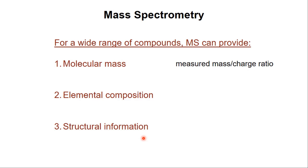Molecular weight is a weighted average of sorts that considers all the isotopes and their different masses in a molecule. Because mass spectrometers measure mass, which is a universal property of matter, this makes mass spectrometry such a broadly applicable analytical tool. Many of the atoms that make up molecules have more than one isotope, and the resulting patterns of masses that arise from these isotopes can often be used to determine a molecule's elemental composition.